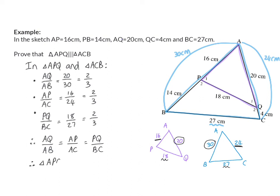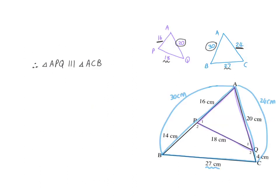The converse theorem then says that these two triangles will be similar. So triangle APQ is similar to triangle ACB, and my reason this time is: sides of the triangles in proportion. Now that we know these two triangles are similar, we also know that the corresponding angles are the same size. So angle A equals angle A in both triangles, and angle P equals angle C — the reason being they are formed by the same corresponding sides.